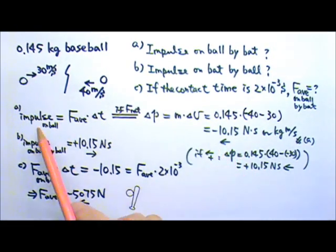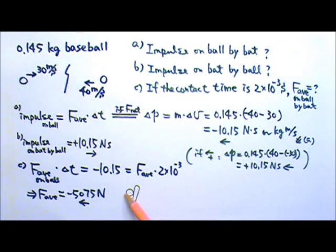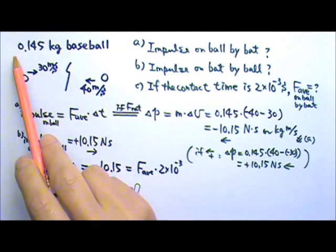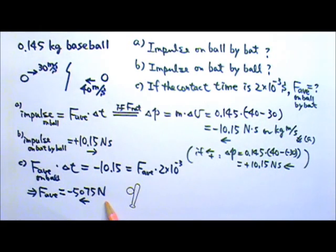It makes sense for the impulse on the ball and the average force on the ball to go to the left, because in order to hit the ball back that way, the contact force between the bat and ball is a normal force. The normal force on the ball goes to the left, and the normal force on the bat goes to the right, so the impulse on the bat goes to the right. Also, for this 0.145 kg ball, Mg is only 1.45 newtons — comparing that to 5075 newtons, it is reasonable to ignore the Mg of the ball.